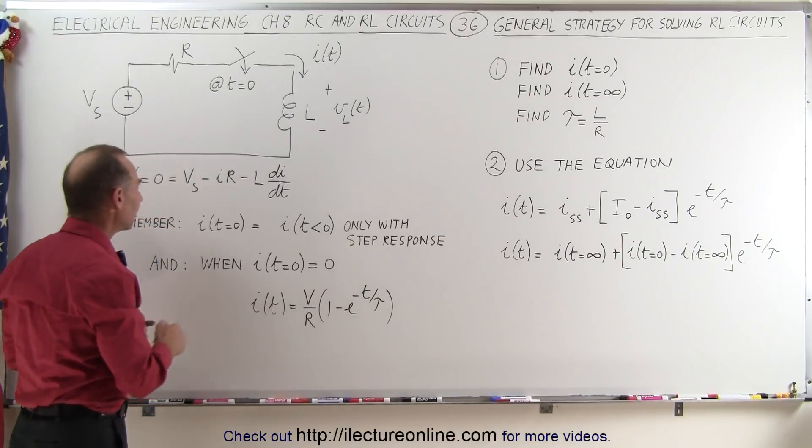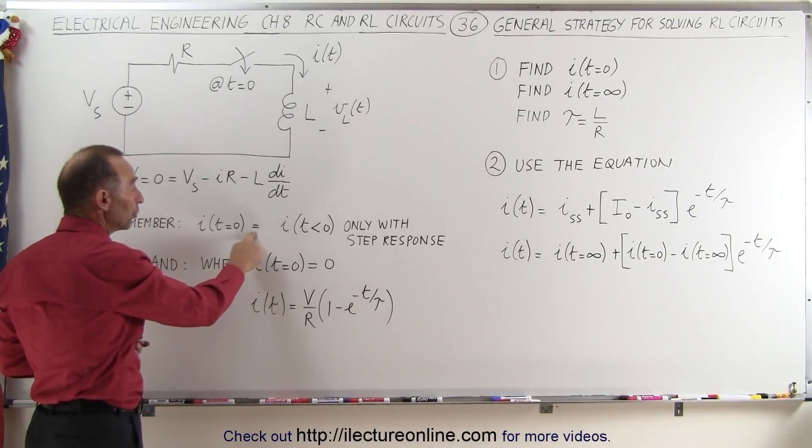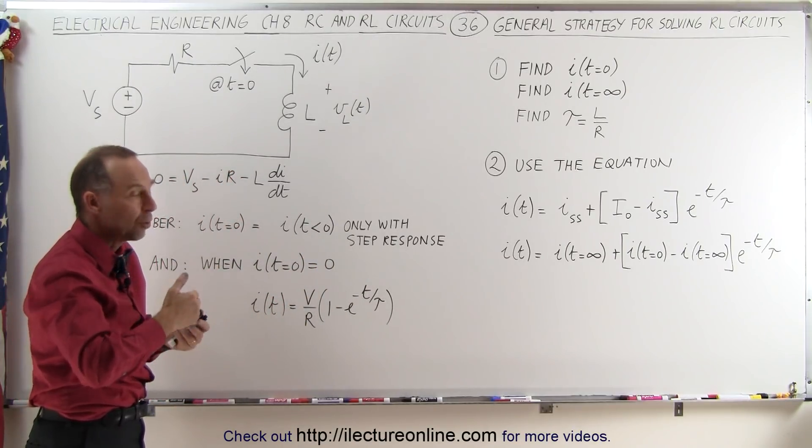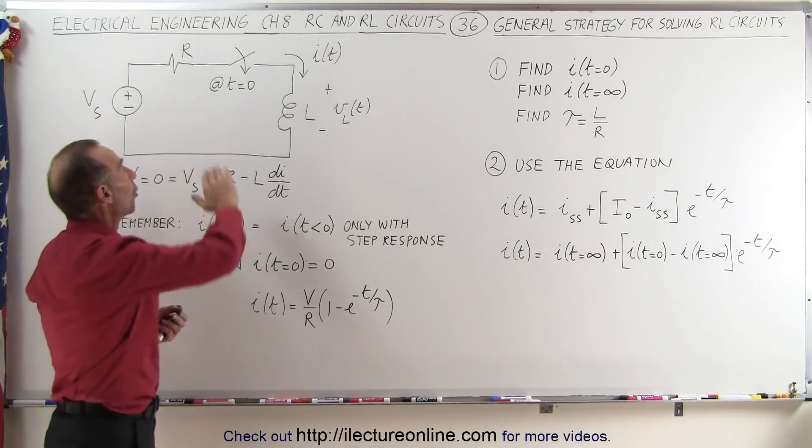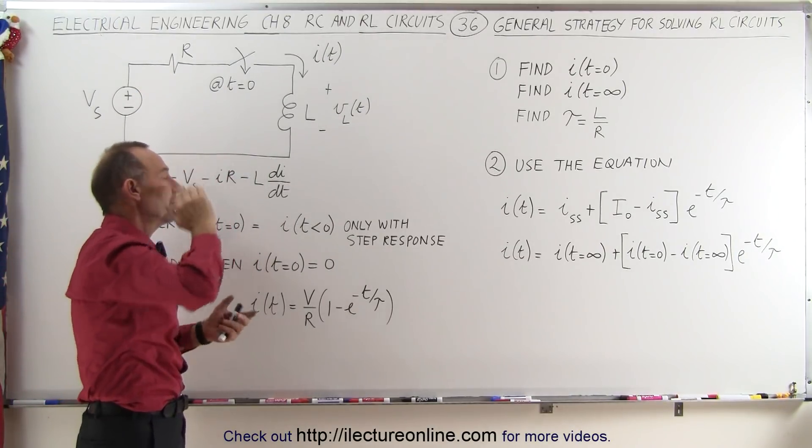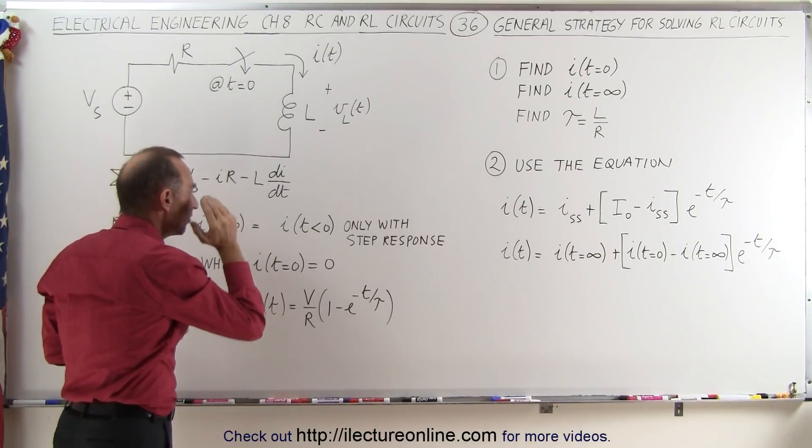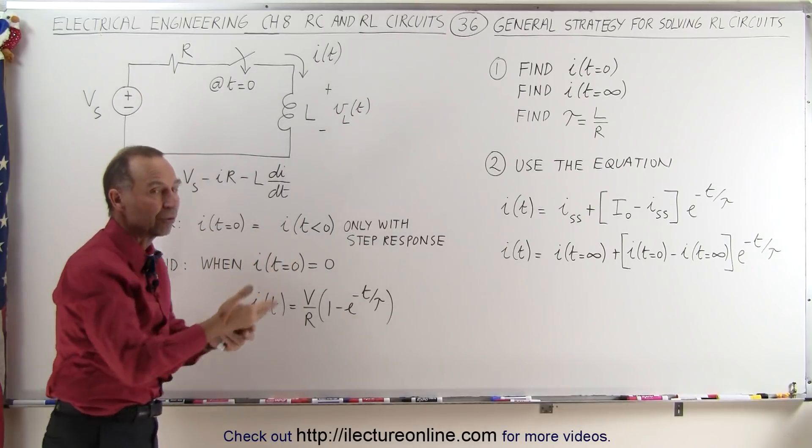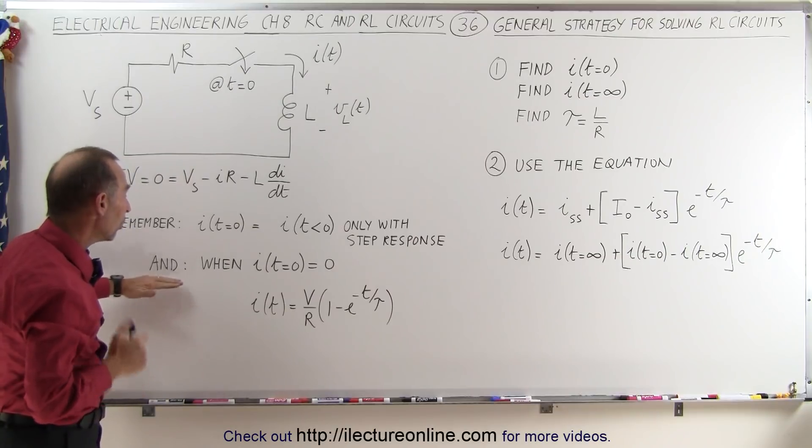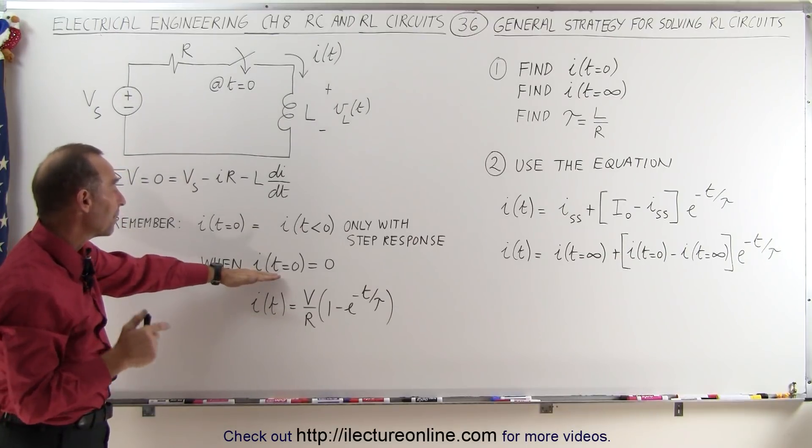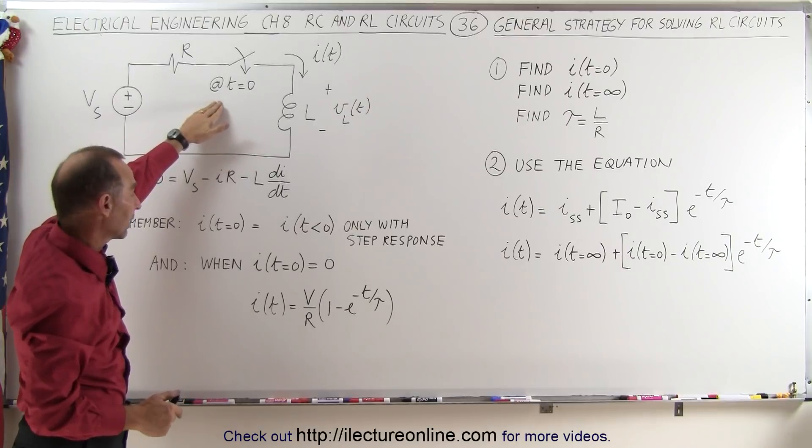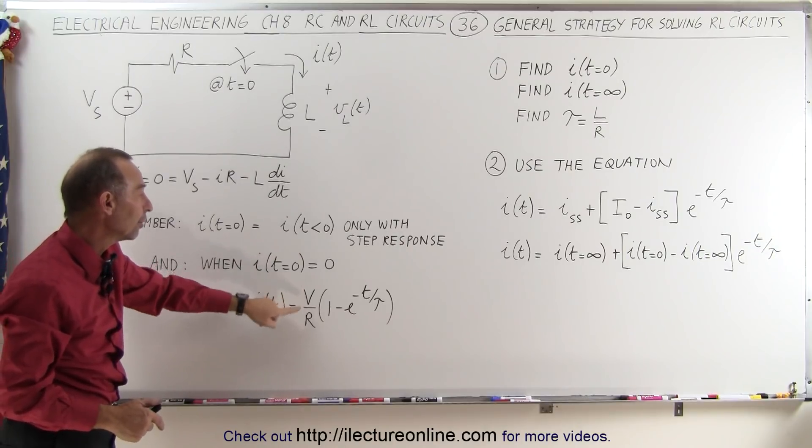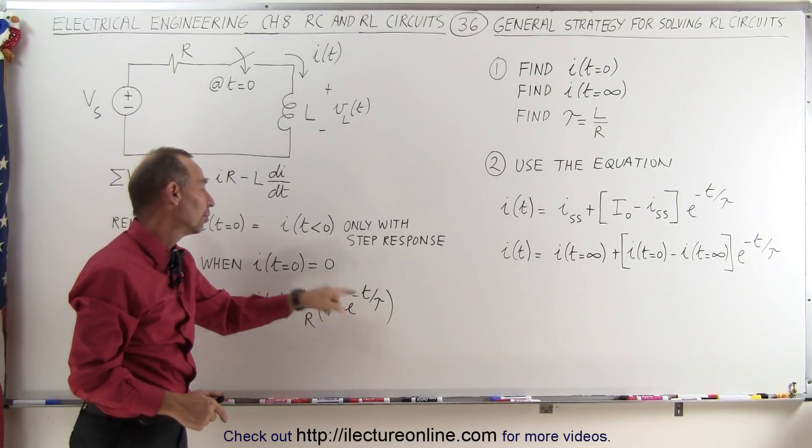We have to remember that the current at t equals zero is actually equal to the current when time is less than zero, but that's only, of course, when we have a step response, when either the source is turned on at t equals zero or the switch closes at t equals zero, the switch opens at t equals zero, whatever it may be. If it's a step response, then we can say that the current at t equals zero is equal to what the current was before time reaches zero. And also, when the current at time equals zero is equal to zero, like it is in this particular case right here, then the equation we have over there reduces to the current is equal to V over R times 1 minus e to the minus t over tau.